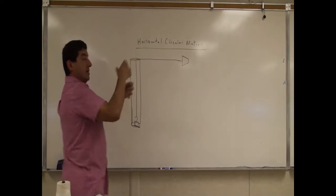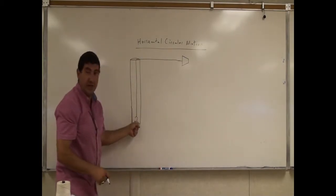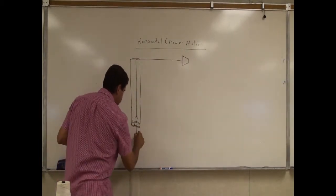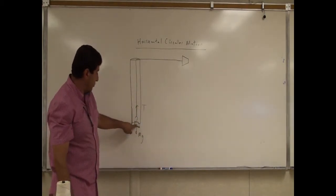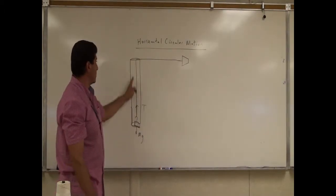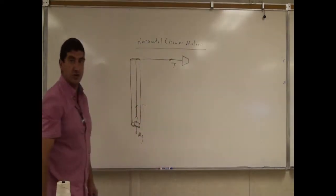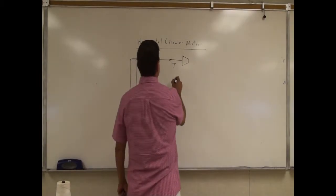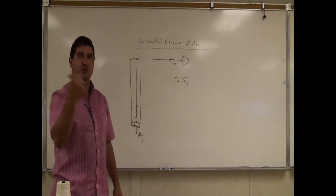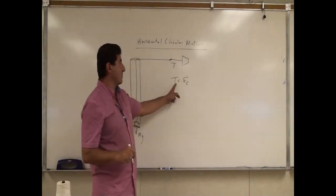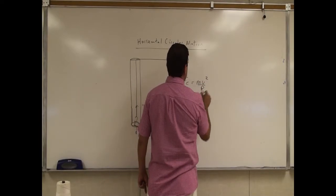Once I get it going, I'll just be holding the tube — I can't be pressing on the weight. The equations of motion here: this is the weight mg, this is the tension T. The tension provided by this hanging weight propagates up and makes the rubber stopper go in a circle. Tension T equals the centripetal force — the force necessary for the rubber stopper to go in the circle — which is provided by the tension in the string.